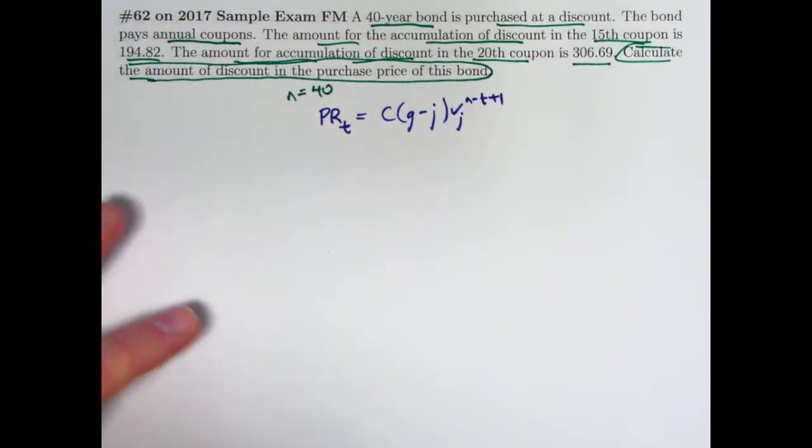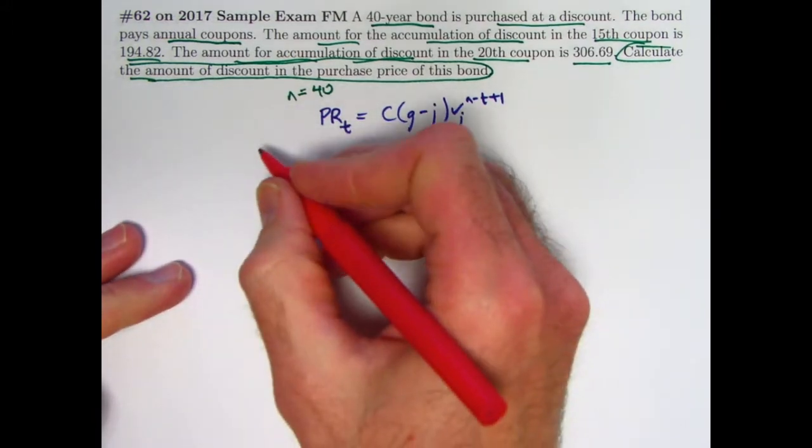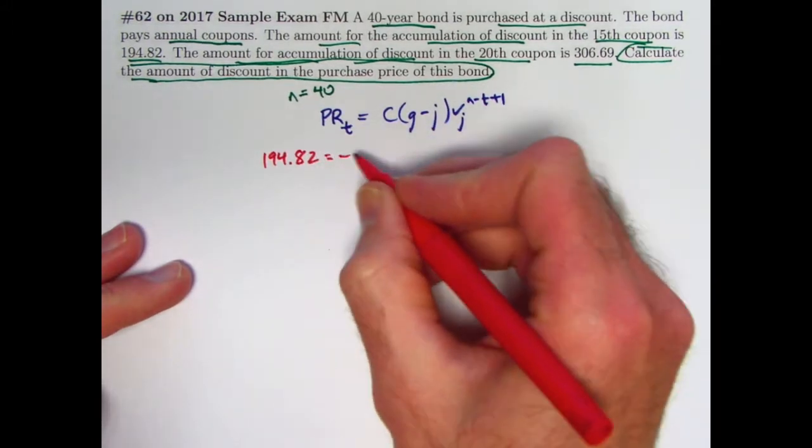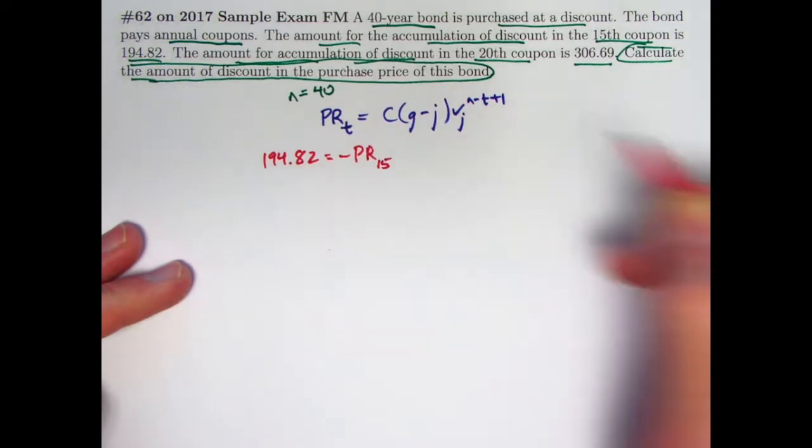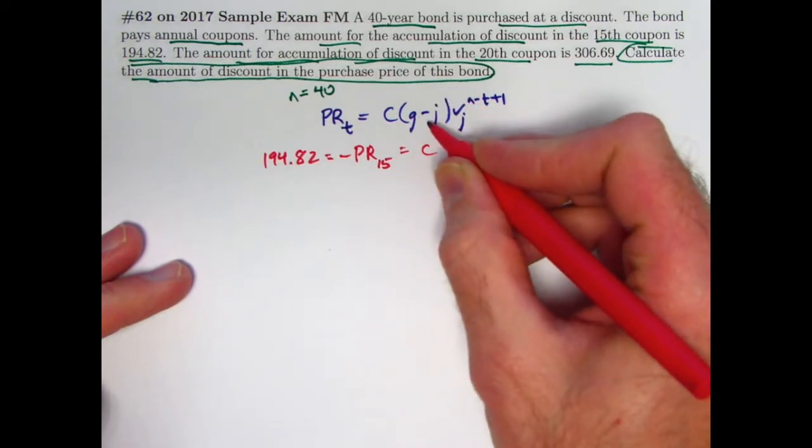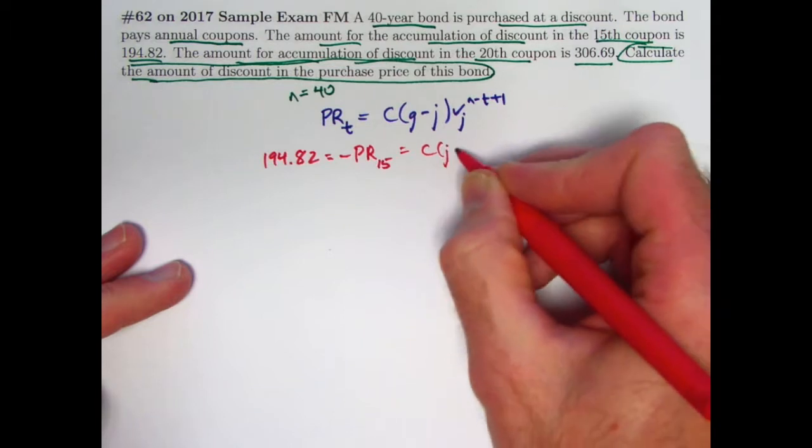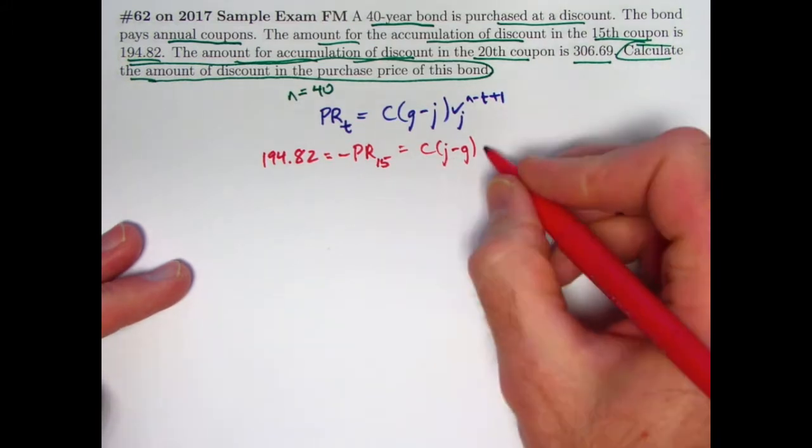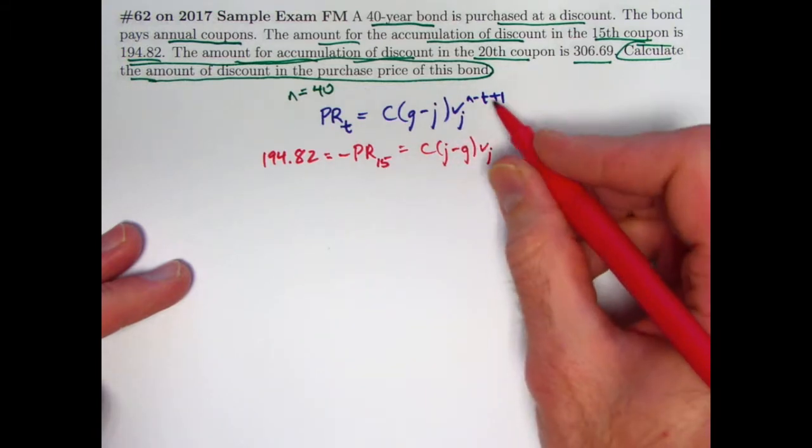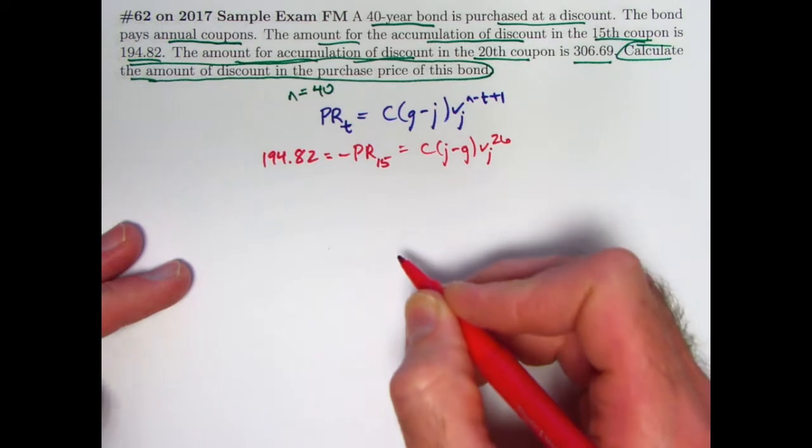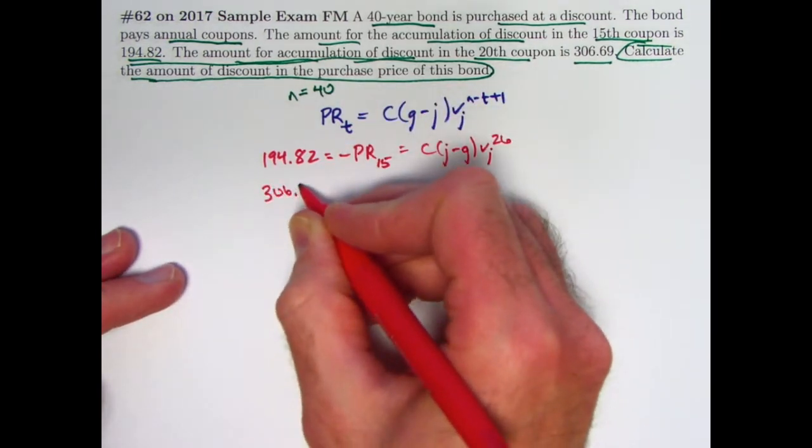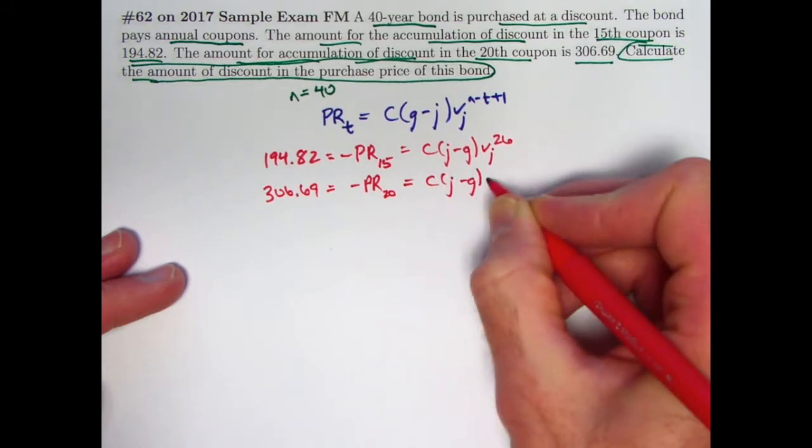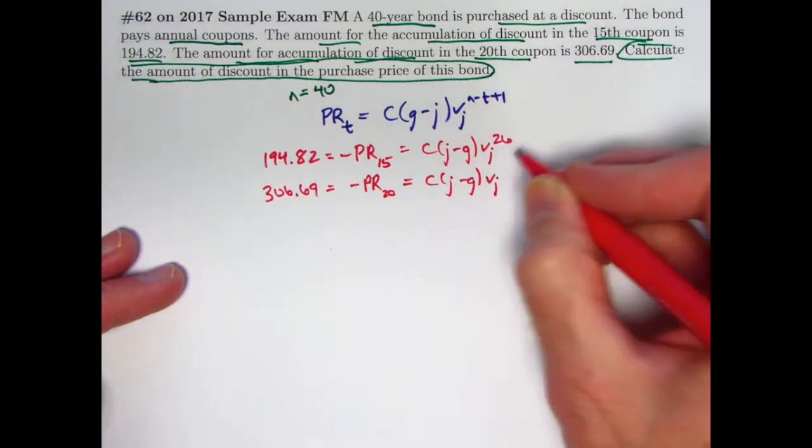So that's going to be one formula that's definitely helpful here. We can use it based on the givens that we have. The 15th coupon payment of 194.82, since this bond is bought at a discount, it will really be the opposite, the negative of PR at time 15. And I can deal with that up here by just switching around the roles of g and j to deal with that negative sign. This is really a positive quantity, though, because it's bought at a discount. j is going to be bigger than g. n is 40, t is 15 there, 40 minus 15 is 25, plus 1 is 26. And the other fact is that 306.69 will be negative PR at time 20. C times j minus g times v_j to the 40 minus 20 is 20, plus 1 is 21st power.